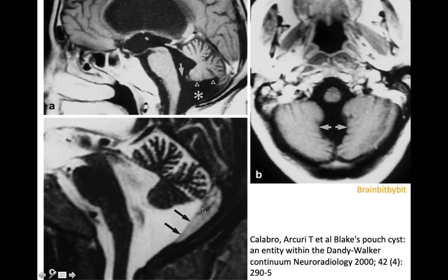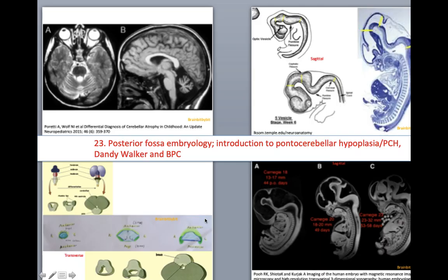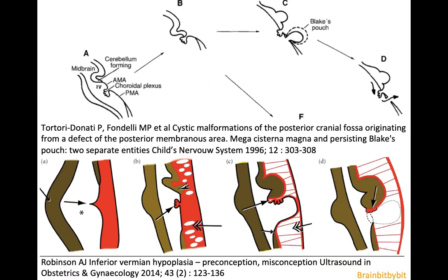Sometimes a thin septum is visible separating Blake's Pouch Cyst from the subarachnoid space. In vlog 23 I have explained the embryology of the posterior fossa in detail, and in Blake's Pouch Cyst there is a problem with the posterior membranous area.